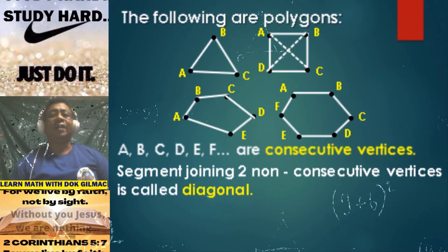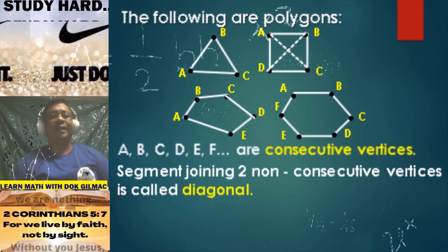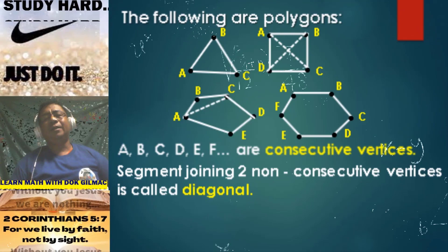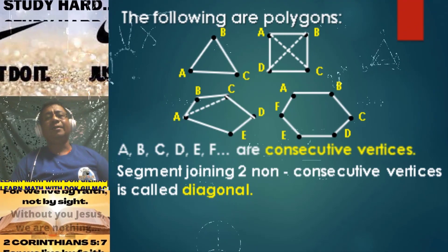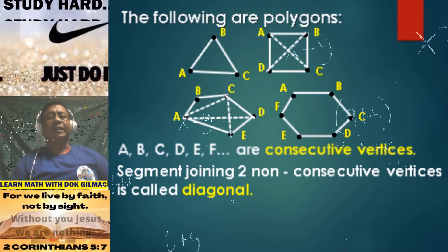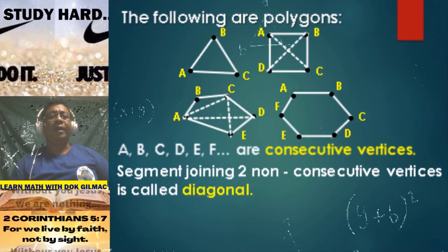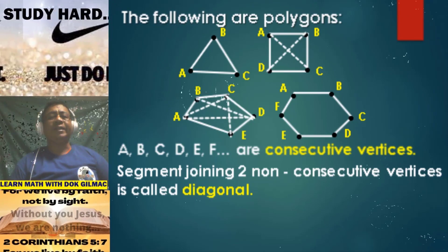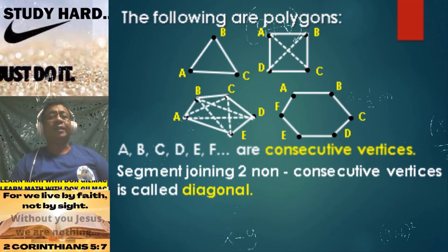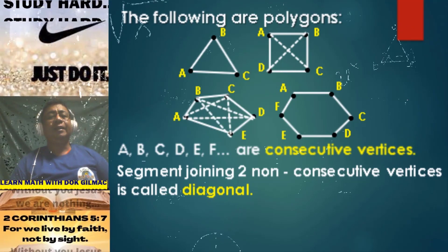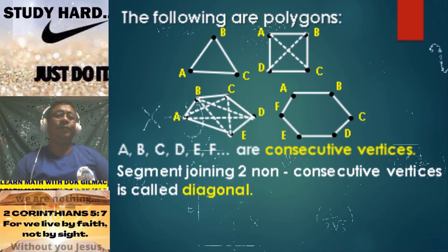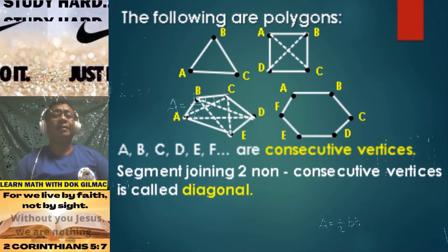As you can see, there are two diagonals for the quadrilateral. For the given pentagon, if you are to join vertex A and vertex C, we have one diagonal. Vertex A and vertex D, we have another diagonal. Vertex C and vertex E, again, we have one diagonal. Vertex B and vertex D, we have another diagonal. Vertex B and vertex E is again another diagonal. As you can see, in the given pentagon there are five diagonals that are formed.